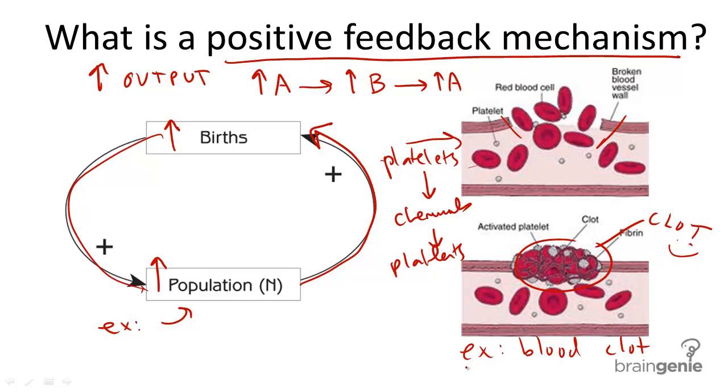Another example of a positive feedback loop is a baby suckling its mother's breast. When the baby sucks, it increases the secretion of prolactin, a hormone released by the pituitary gland, which produces milk. The more the baby sucks, the more milk is produced.